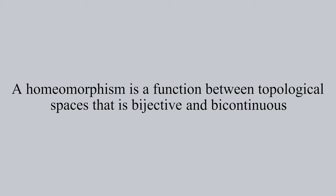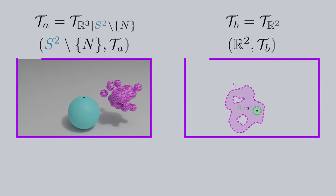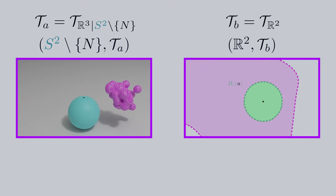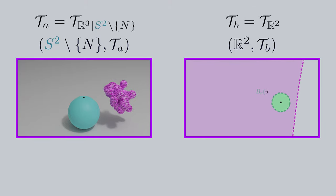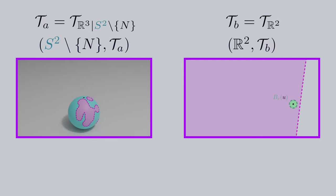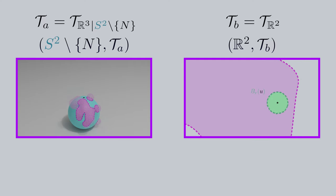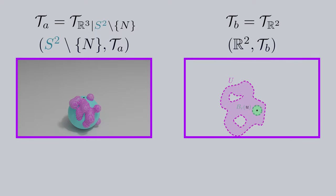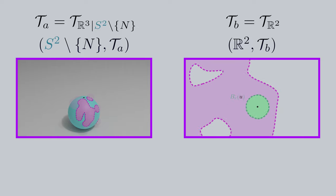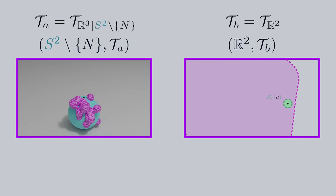A homeomorphism is a function between topological spaces that is bijective and continuous with a continuous inverse, or bicontinuous. In the previous video of this series, we talked about why the punctured sphere and R² are topological spaces with their respective topologies, which I'm naming tau A and tau B. Tau A is the standard subspace topology on the punctured sphere, and tau B is just the standard topology on R². This is how we'll define our topological spaces for this part of the series.